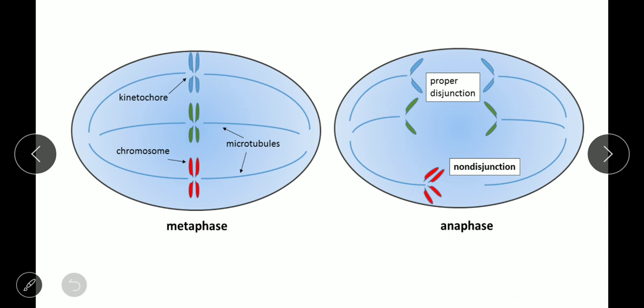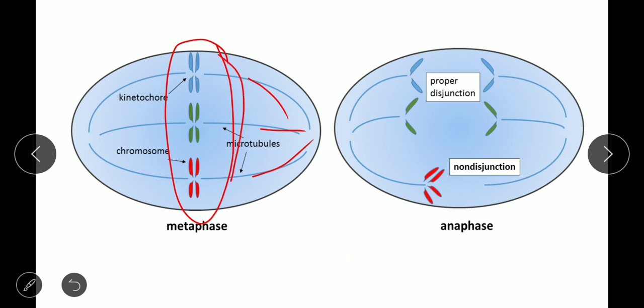During metaphase, chromosomes will align at the center of the cell. Metaphase is the stage of mitosis in which the chromosomes align at the equator or center of the cell before being separated. The microtubules or spindle fibers, shown in blue, are attached at the centromere of the chromosomes. With the help of these microtubules, the chromosomes align at the center of the cell during metaphase.